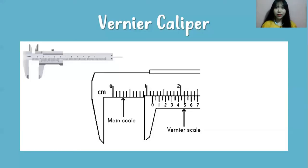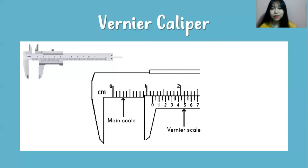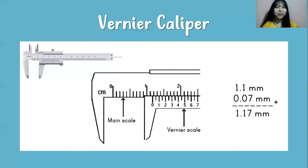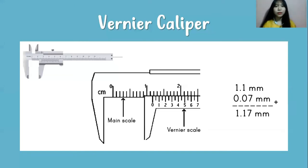Back with me again. Let's see what this Vernier caliper shows. The main scale is reading 1.1 cm. The Vernier scale is showing 0.07 cm. So the total is 1.17 cm.